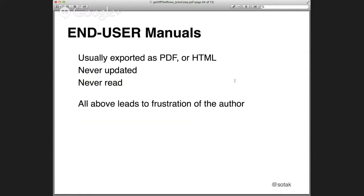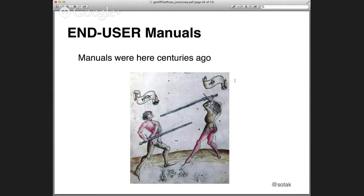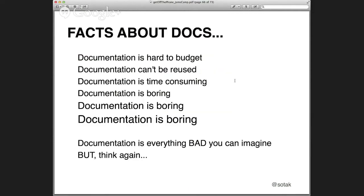When talking about end user manuals — usually exported as PDF or HTML, never updated, never read — all that I mentioned was frustrating for the author. End user manuals have existed for centuries; for example, this is from a fencing manual. They faced similar issues: there was knowledge they thought everyone knew, but it was forgotten over time. Some facts about documentation: it is hard to budget, it can't be reused, it is time-consuming, and it is really very boring — documentation is basically everything bad you can imagine.